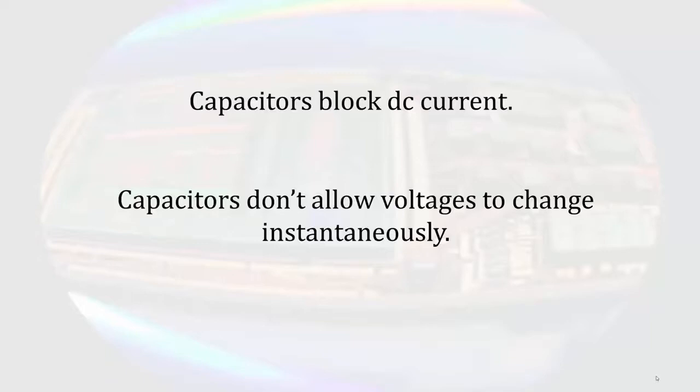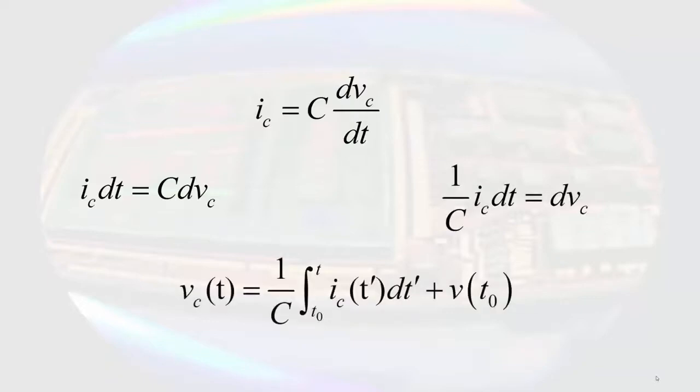Let's take another look at the current voltage relationship for the capacitor. While this may make some mathematicians unhappy, if we multiply through by dt, which is an operator and not a variable, then with a bit of quick mathematical manipulation and integration of both sides, we find that the voltage across the capacitor is proportional to the integral of the current.